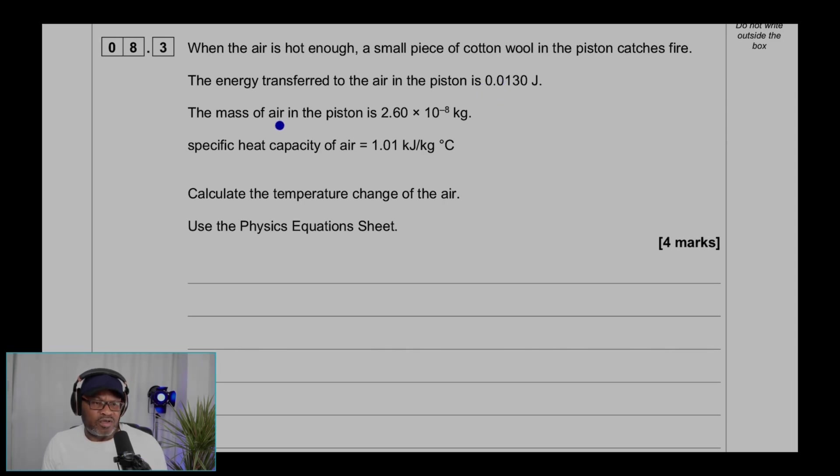The mass of air in the piston is 2.6 × 10^-8 kg. Specific heat capacity of air is 1.01 kJ/kg/°C. Calculate the temperature change of the air. Use the physics equation sheet. Four marks.